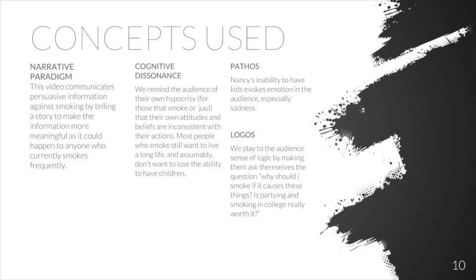Throughout the narrative, we also use other forms of persuasion. We use the concepts of both pathos and logos, which were conceptualized by Aristotle in ancient Greece. Pathos refers to the audience's sense of emotion — the fact that Nancy couldn't have kids invokes emotion in the audience, especially sadness. Logos plays to the audience's sense of logic, making the audience ask themselves: why should I smoke if it causes these things? Is partying in college really worth it?